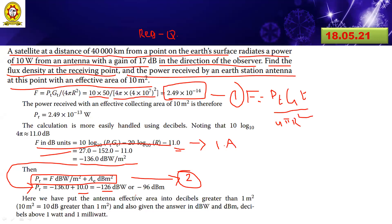Substituting into the PR expression, finally we got the value in watts format: minus 126 dBW, or in dBm format: minus 96 dBm. The conclusion here is that the antenna effective area input is greater than the input data. That's why here we got minus 96 dBm. This is from one of the previous question papers — take snapshot.